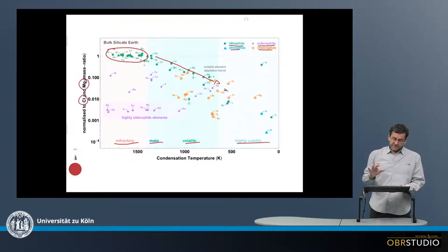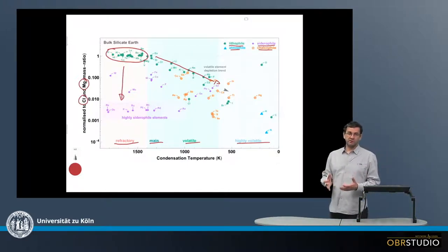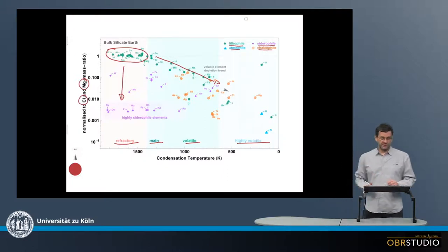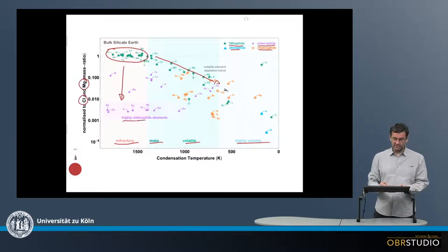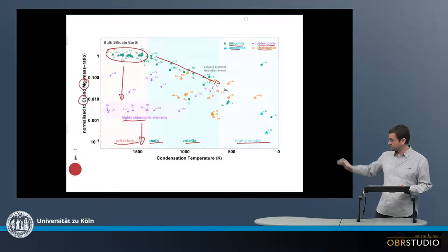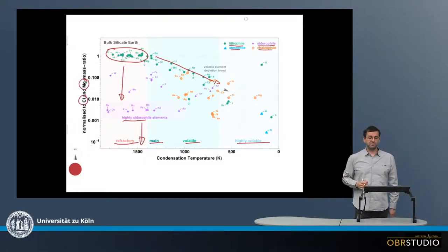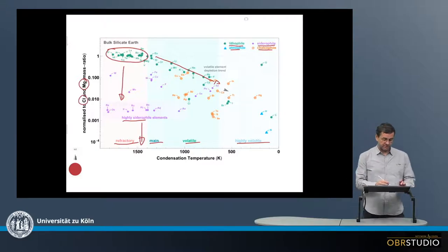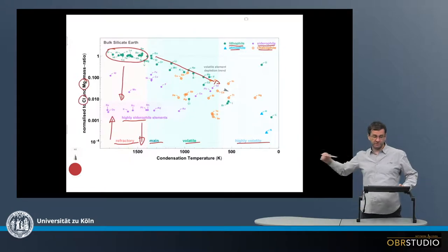When we look at the siderophile elements, starting with the refractory elements, we can see that these are largely depleted. This is clear because we would expect all of them to be in Earth's core. In fact, the highly siderophile elements should be at zero, all the way down here. But they are not, they are slightly enriched, although we would expect them much further down.